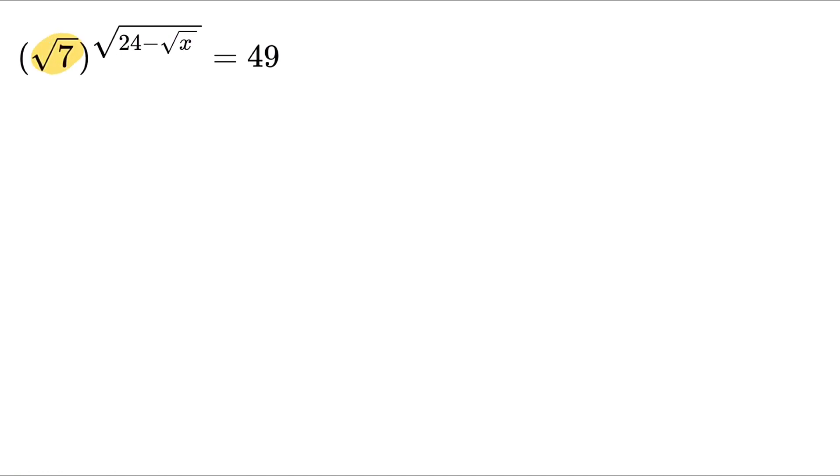So at first, we focus on this part: under root 7. This can be written as 7 to the power 1/2. So now we write this here: 7^(1/2), and here this power is multiplied: √(24-√x). And here, 49 can be written as 7 to the power 2, which means 7 squared.